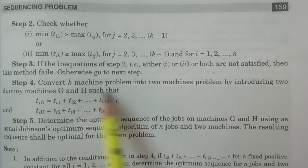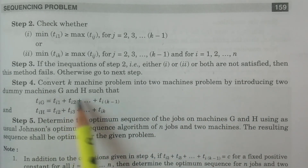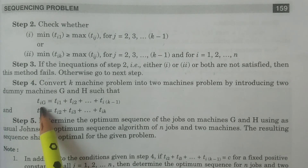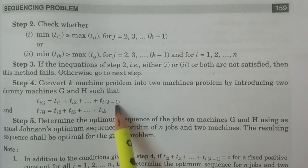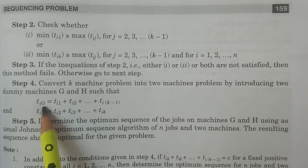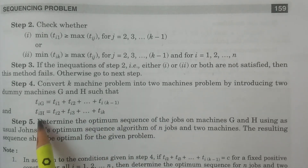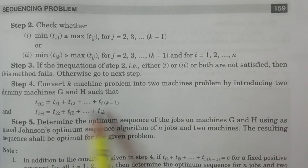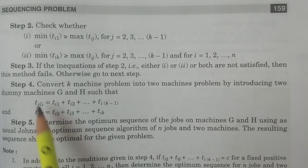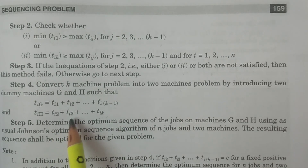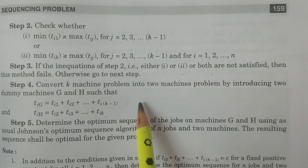If either condition is satisfied, you convert the k-mission problem into a two-mission problem by introducing two dummy missions G and H. The processing time for dummy mission G is: tig = ti1 + ti2 + ... + ti(k-1), summing from the first to the (k-1)th mission. The processing time for dummy mission H is: tih = ti2 + ti3 + ... + tik, summing from the second to the kth mission.